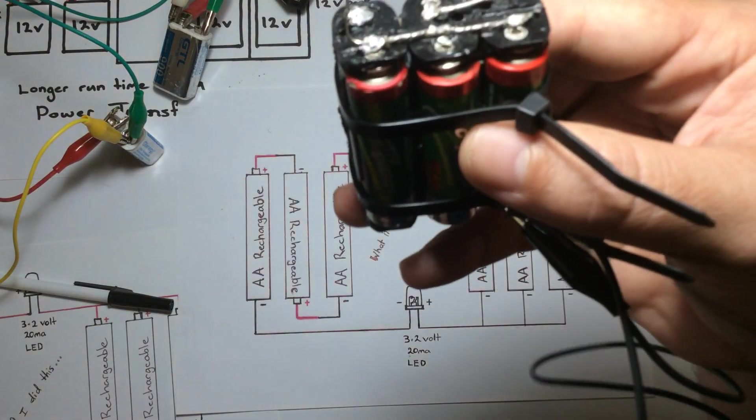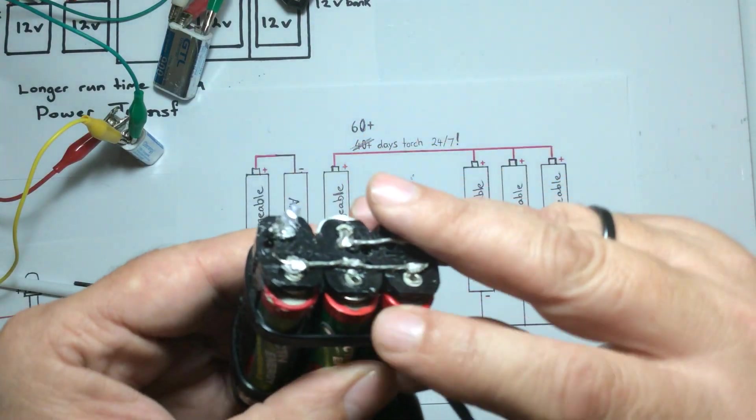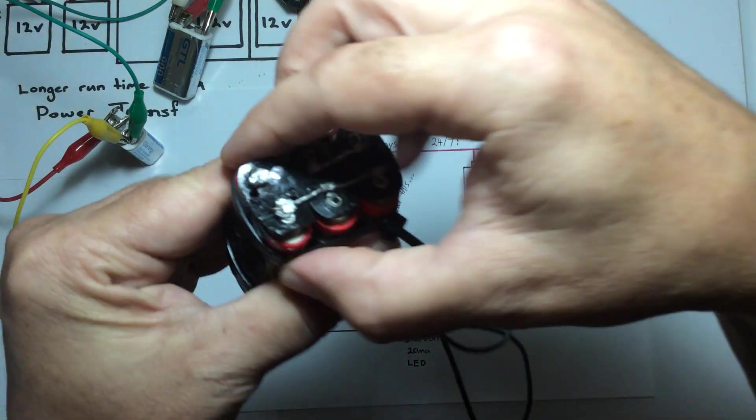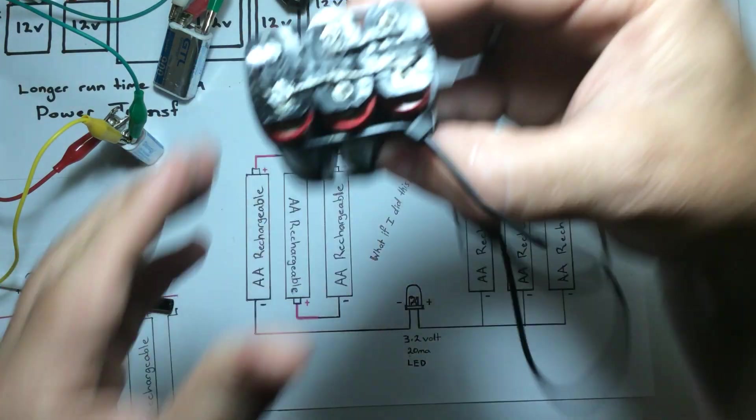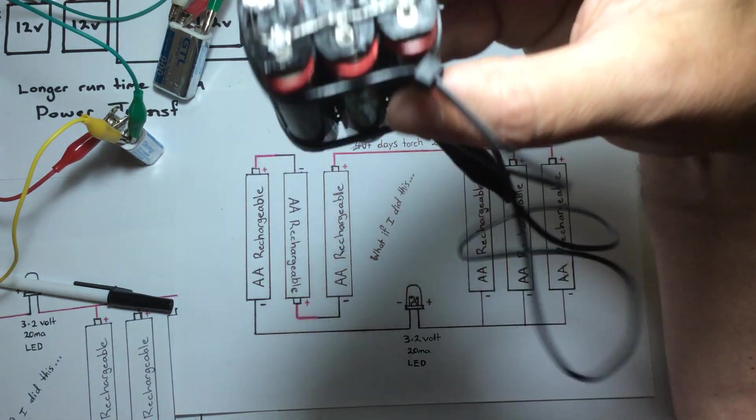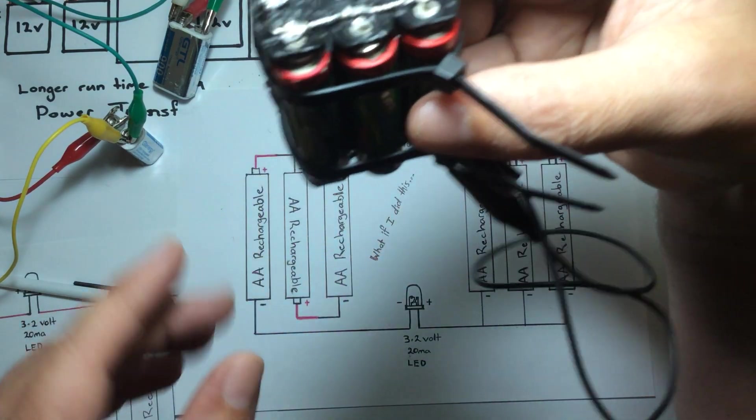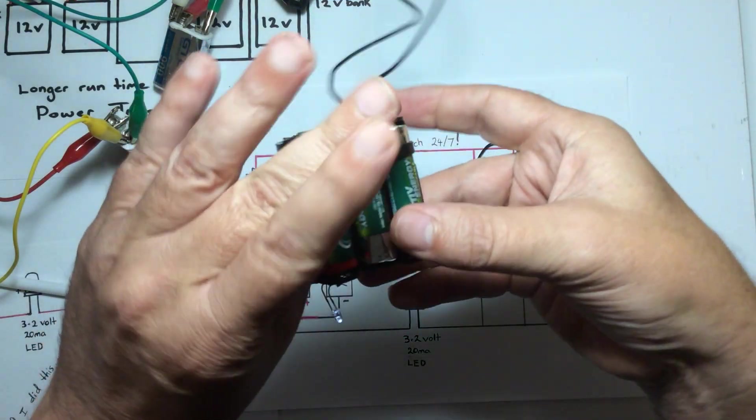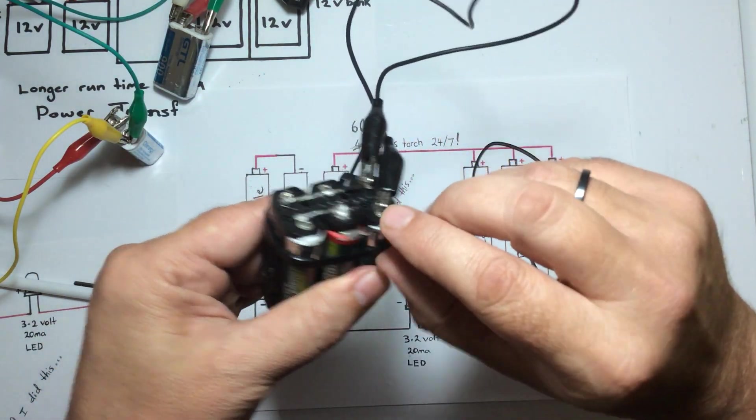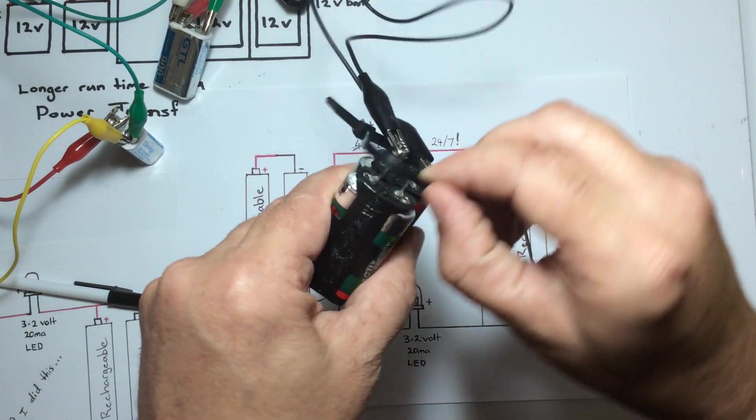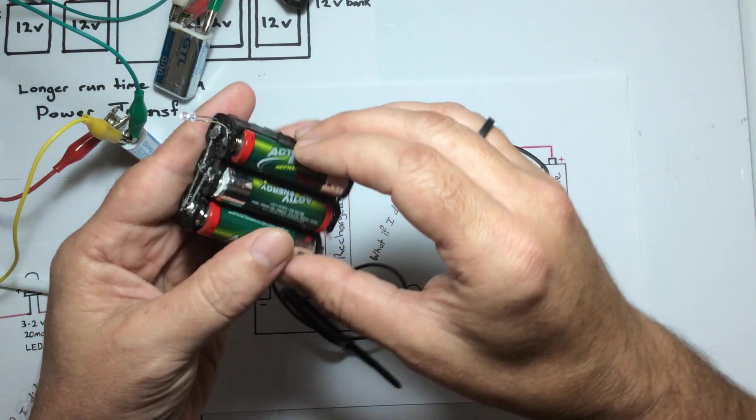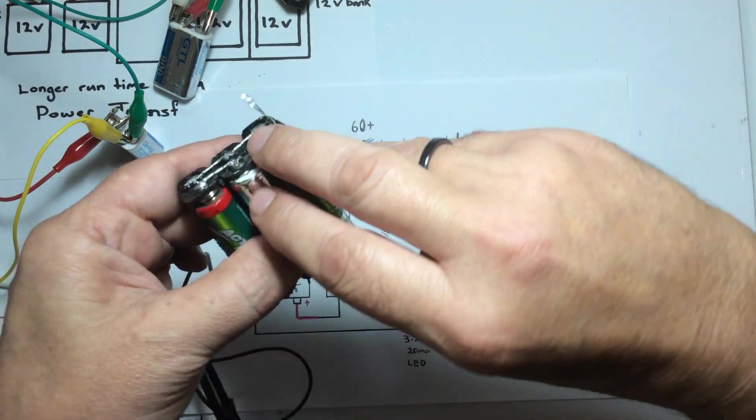These batteries have still received no external input. The LED operates purely off of the initial charge that I did 60 days ago. Just a very handy thing to have kept in the house for blackouts and that sort of thing. Now I'm going to swap these batteries over at the 60-day mark and allow the test to continue.